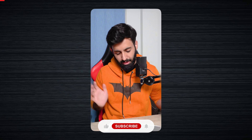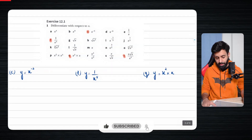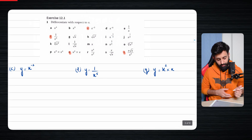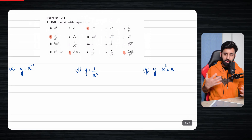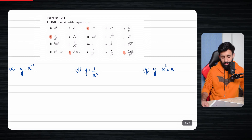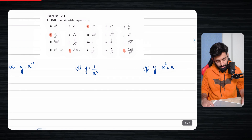As I said in the last video, we're going to solve some questions. We have examples from exercise 12.1 and let's see how we're going to differentiate them. Remember, when you solve something, that means you're finding a certain value. It says differentiate with respect to x. I'm going to do the parts that I've highlighted, so let's do part c.